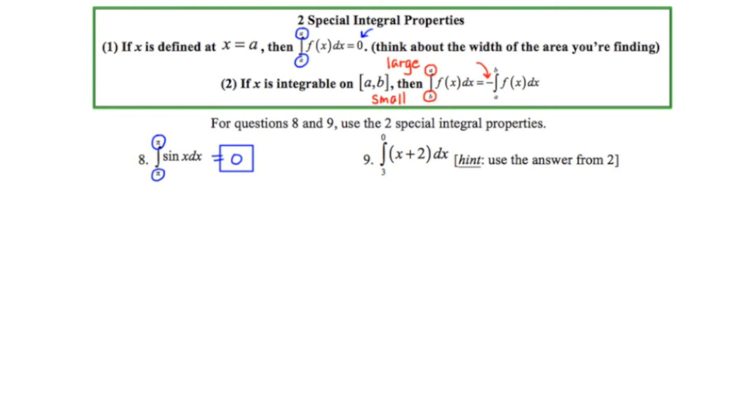So if we look at number nine it says evaluate the definite integral from three to zero of this line y equals x plus two. So what strikes me initially about this problem is that these limits are out of order. It should be small number large number and it's backwards. So I can account for that by putting a negative in and then reversing the limits of integration and saying zero to three. So putting this negative symbol in was really important.